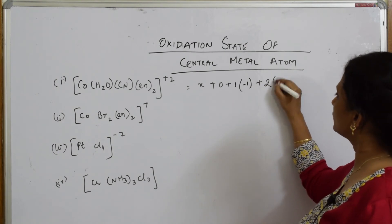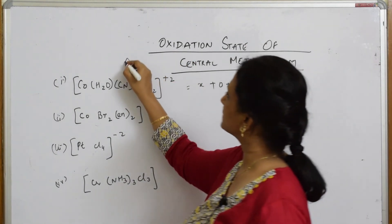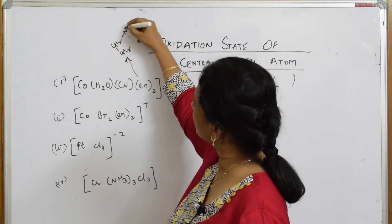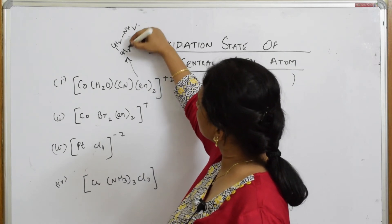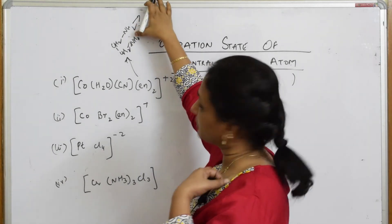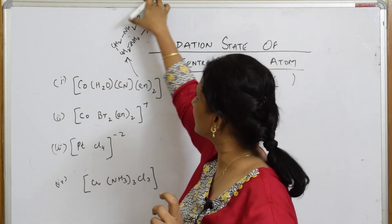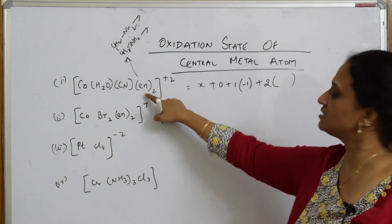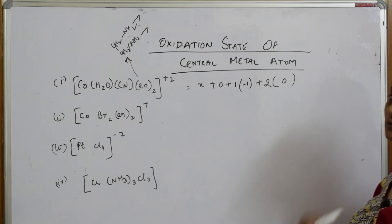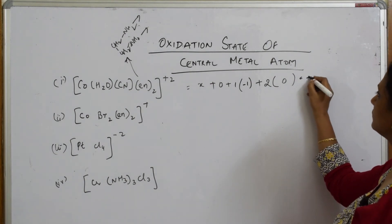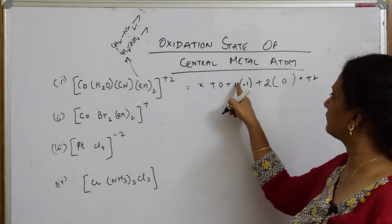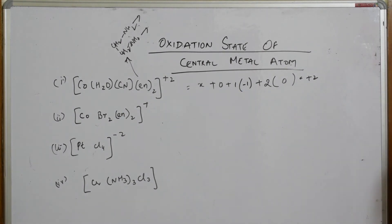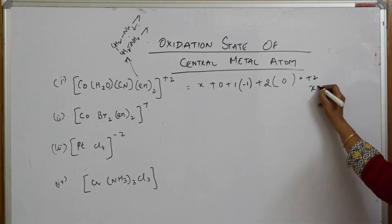Ethylene diamine (en) has the formula H2N-CH2-CH2-NH2 — both donor nitrogen sites are neutral, so en is a neutral ligand with charge 0. So 2 × 0 = 0 for en. Setting up: X + (−1) + 0 + 0 = +2, giving X = +3.